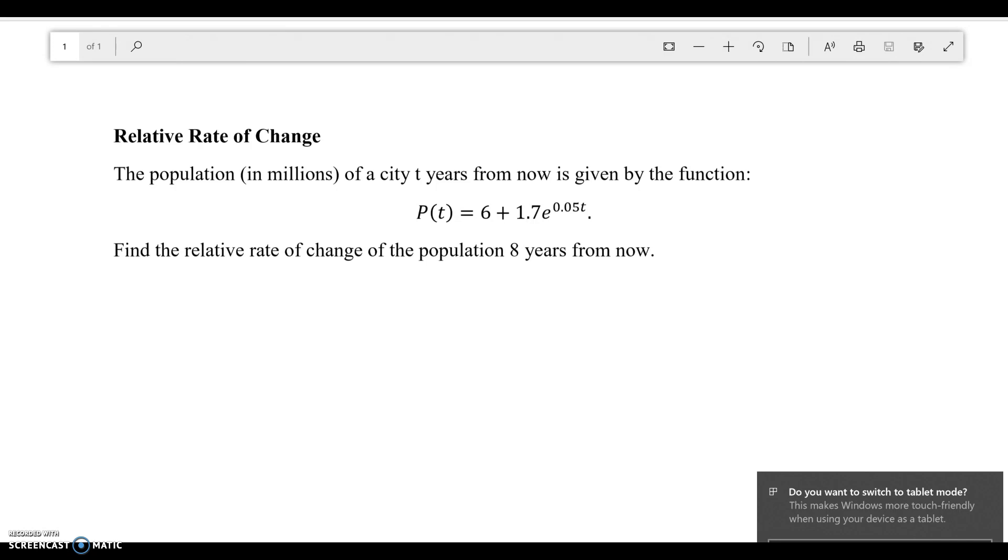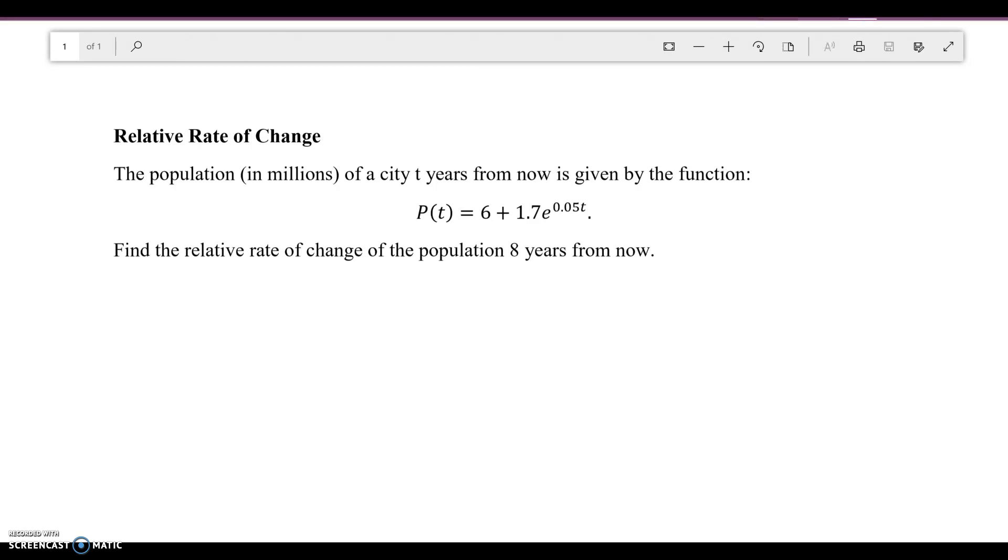If you remember the formula to find the relative rate of change, we know that the relative rate of change, I'm going to write it as RRC, is going to be the derivative of the function divided by the original function. In order for me to do this, I have to take the derivative of my population function and divide it by the total function. That will give me the relative rate of change.